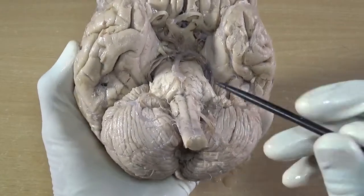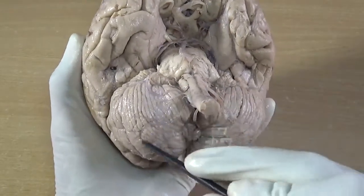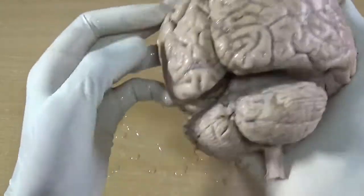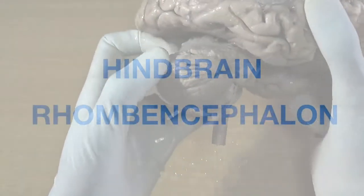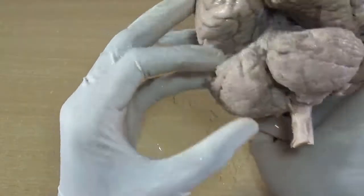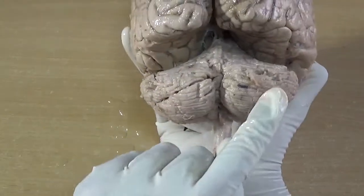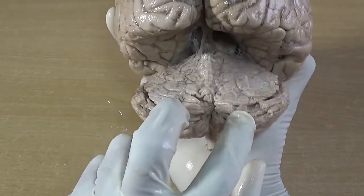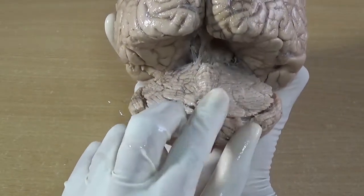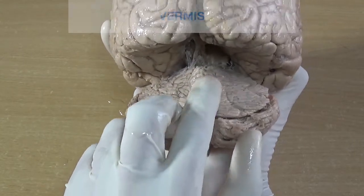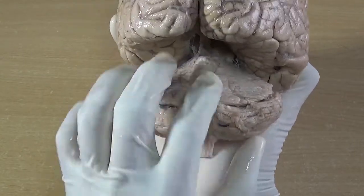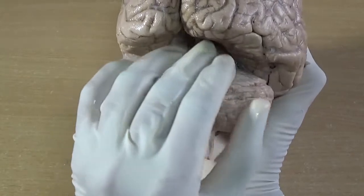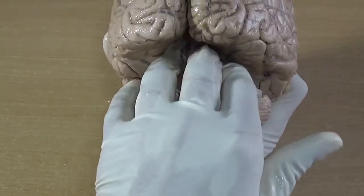In this video we are going to discuss the external features of the cerebellum. It is part and parcel of the hindbrain or rhombencephalon. These two cerebellar hemispheres are connected in the midline by a worm-like structure termed as the vermis.